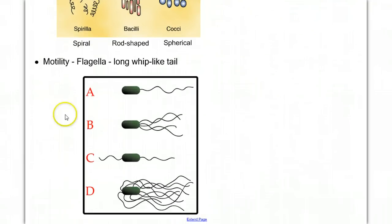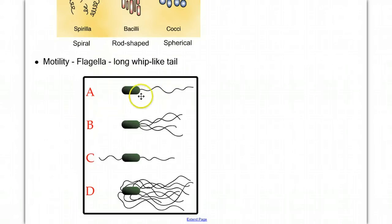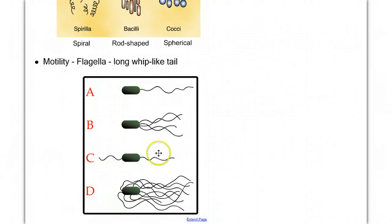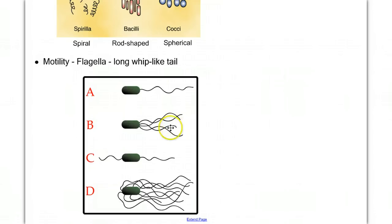Many bacteria are motile — they have a long, whip-like tail called a flagella. Sometimes they have a single flagella, sometimes multiple. They can have them on both ends to go in one direction or the other without turning around, and sometimes many flagella come off on all different sides. The key point is that bacteria can respond and move away from or towards a stimulus.